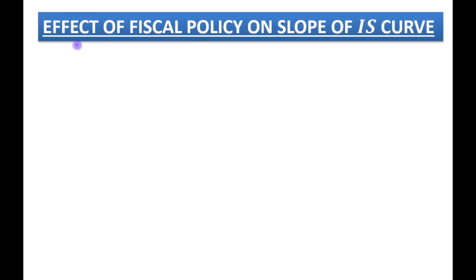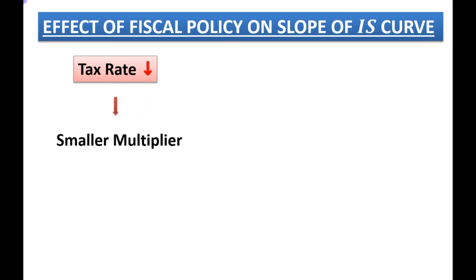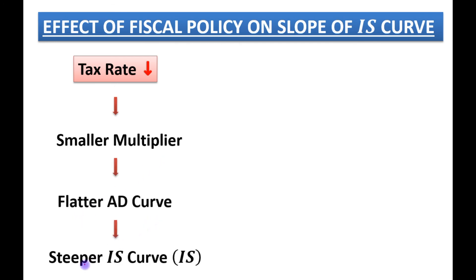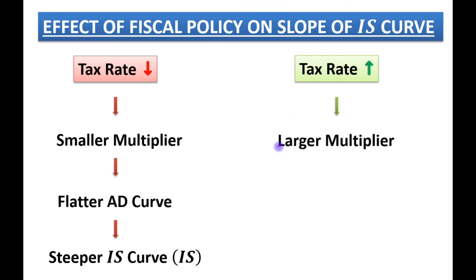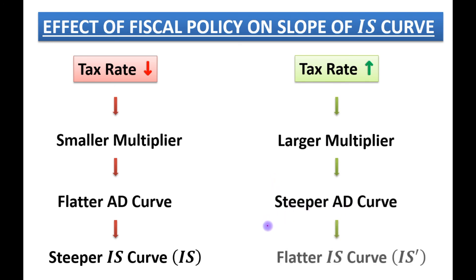Now, the effect of fiscal policy on the slope of the IS curve: if the tax rate decreases, there will be a smaller multiplier and a flatter AD curve, and finally a steeper IS curve. The second case: if the tax rate increases, this implies a larger multiplier, due to which there will be a steeper AD curve and finally a flatter IS curve.